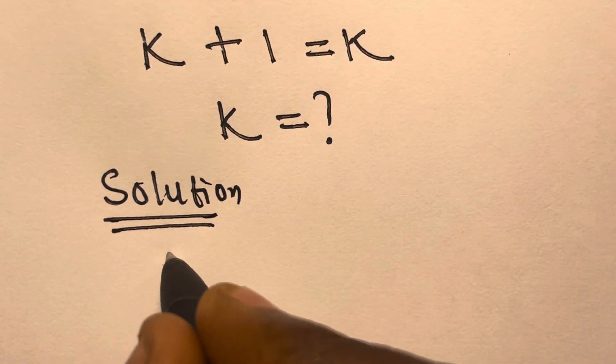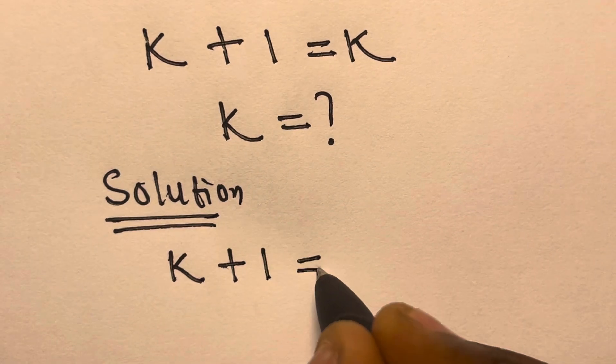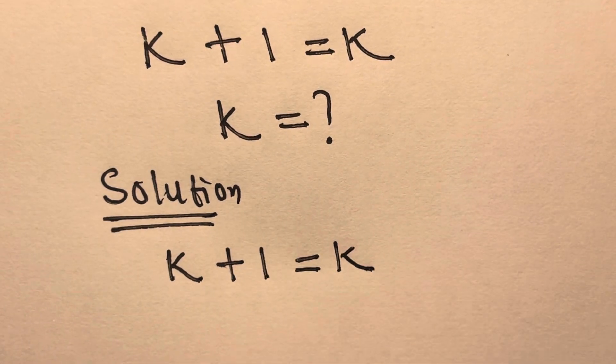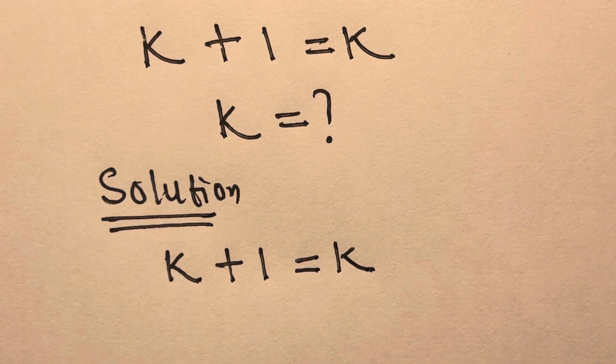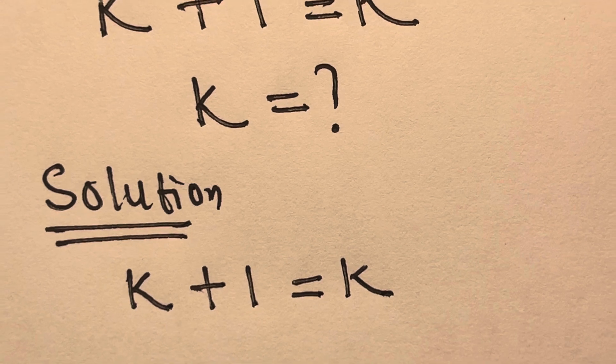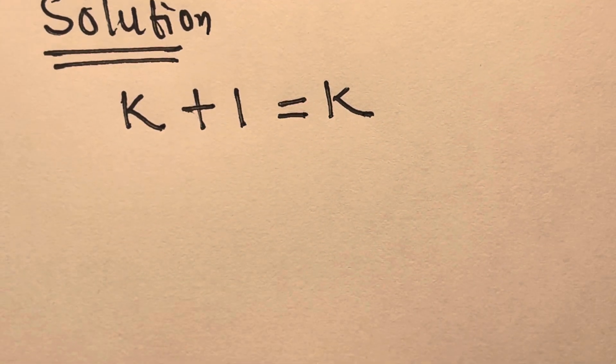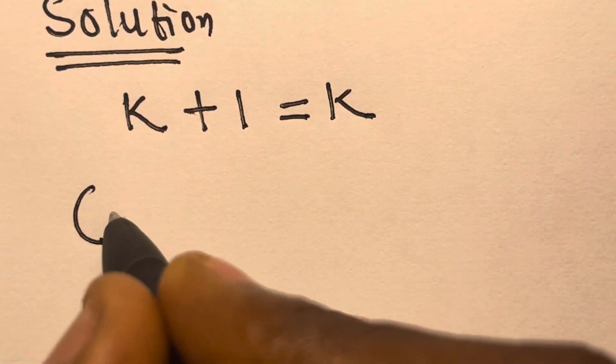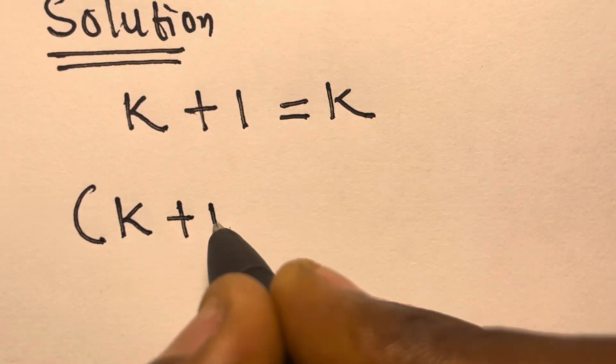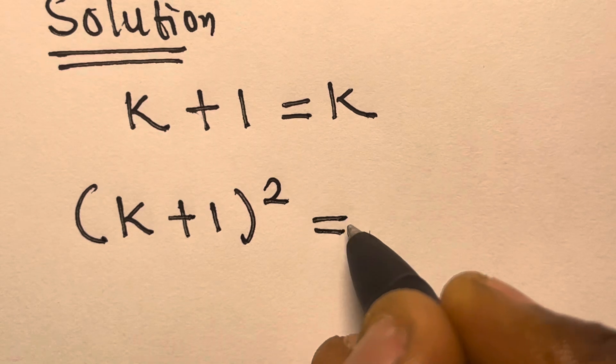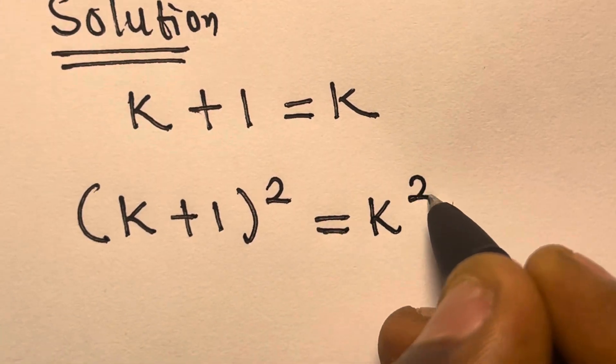So we have k plus 1 equals k. Right? So from here, we can take the square of both sides. So that we have k plus 1 square equals k square.